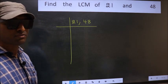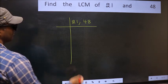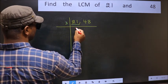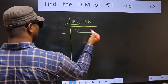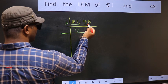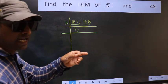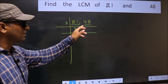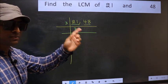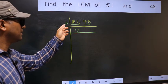Now focus on the first number, which is 21. 21 is 3 times 7. For the other number 48, to check whether 48 is divisible by 3 or not, add the digits: 4 plus 8 equals 12, and 12 is divisible by 3. So 48 is also divisible by 3.